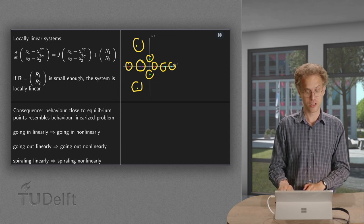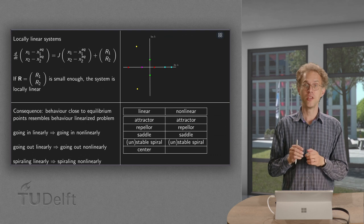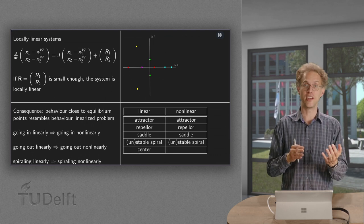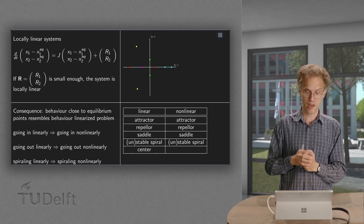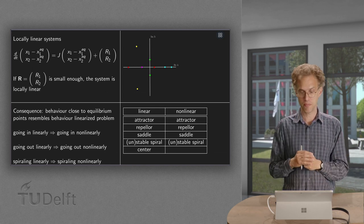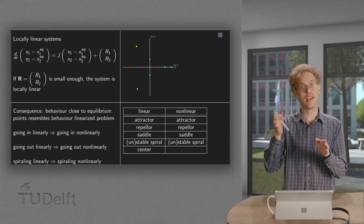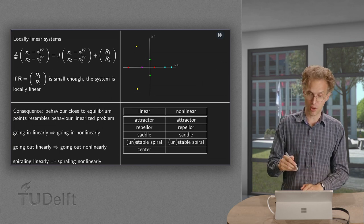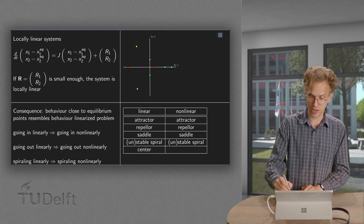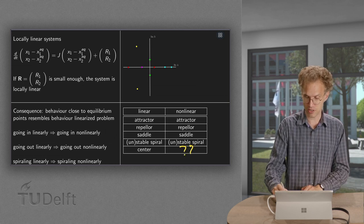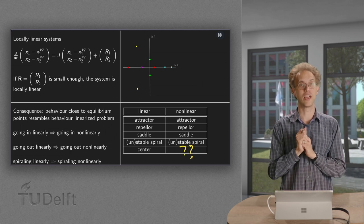So we can summarize this picture here. If you have linearly an attractor, we have one non-linearly. Repeller, same. Saddle, the same. For stable or unstable spiral, the non-linear story and the linear story are the same. But only if you have a center in the linear case, we do not know what happens in the non-linear case.